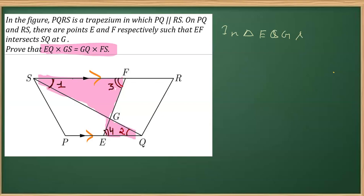We can say that angle 1 is equal to angle 2 and angle 3 is equal to angle 4, from the reason that they are alternate interior angles. Now we can say triangle EQG is similar to triangle FSG.